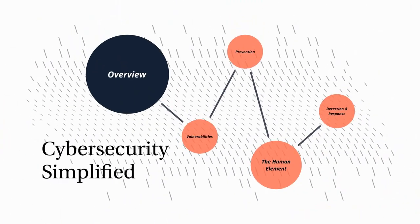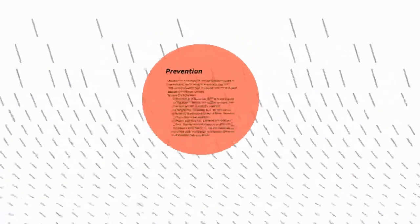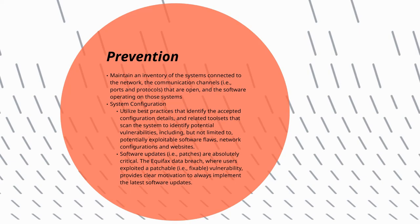Now that we have identified different types of vulnerabilities, how do we avoid them? A critical first step is to maintain an inventory. This includes the systems connected to the network, the communication channels that are open, as well as the software operating on those systems. It is imperative to know what hardware, software, and protocols are in use in order to ensure they are properly configured and patched. Employ best practices to properly configure devices and run tool sets that scan the system to identify potential vulnerabilities, including exploitable software flaws. Software updates or patches are absolutely critical in avoiding potential data breaches.